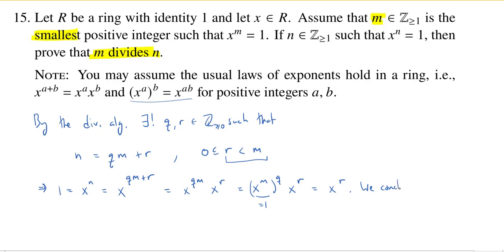So we conclude r equals 0. Is that good? Well, where did r come from? That came from the division algorithm. So if r is equal to 0, then n is equal to q times m plus 0, the r is 0. Hey, this is exactly telling us that m divides n.